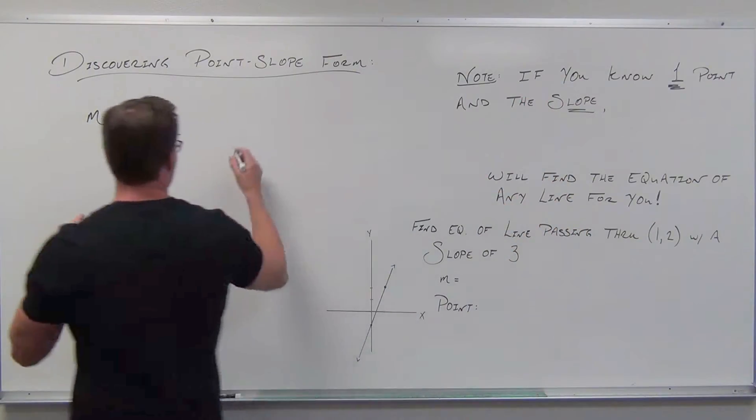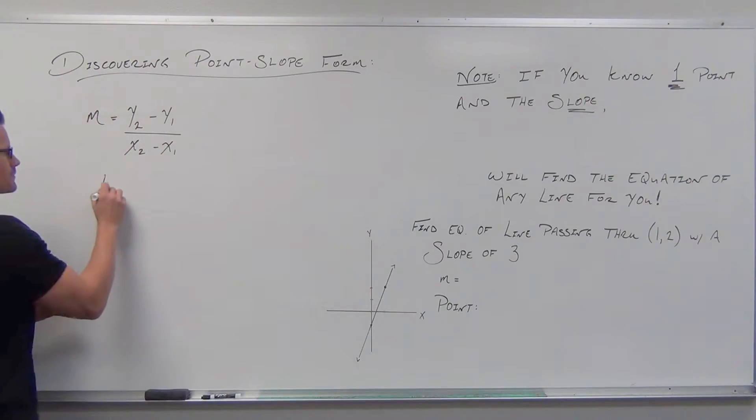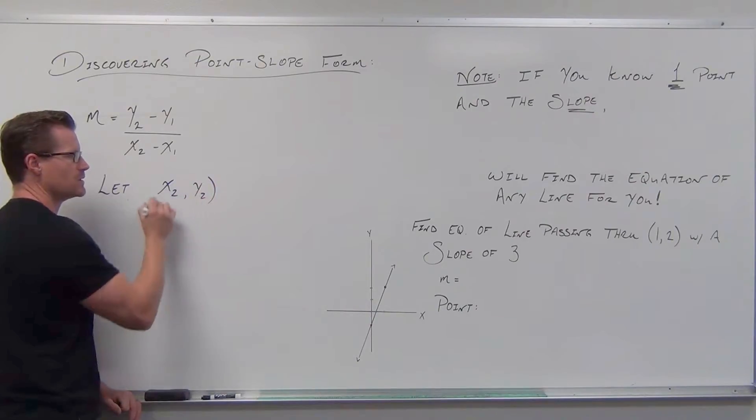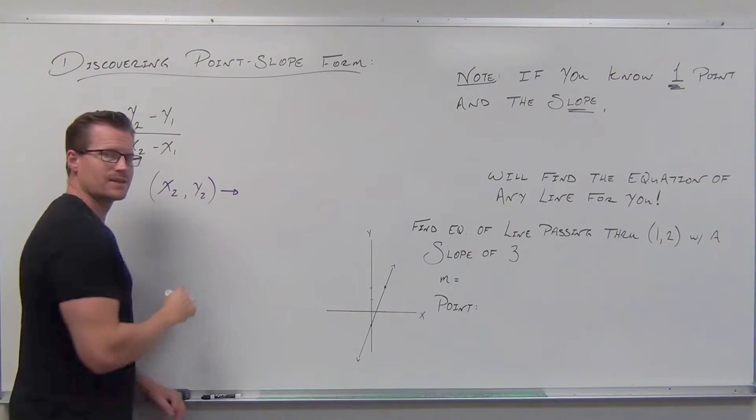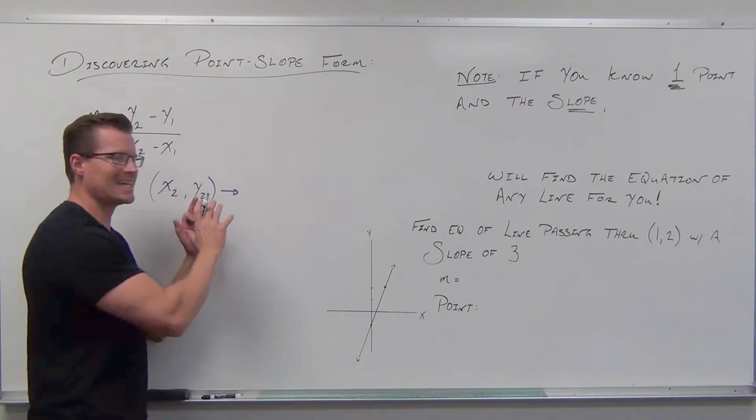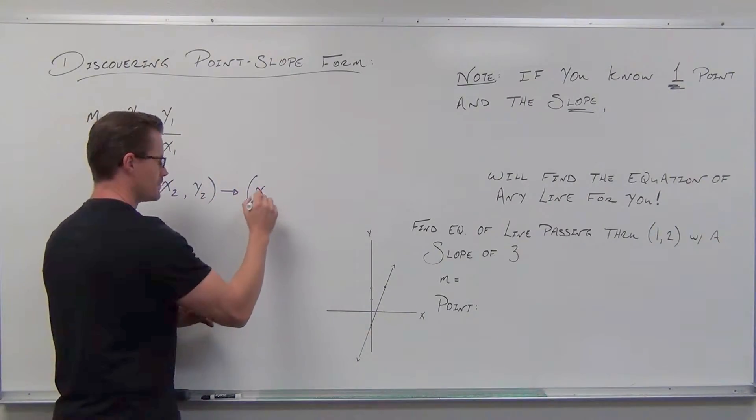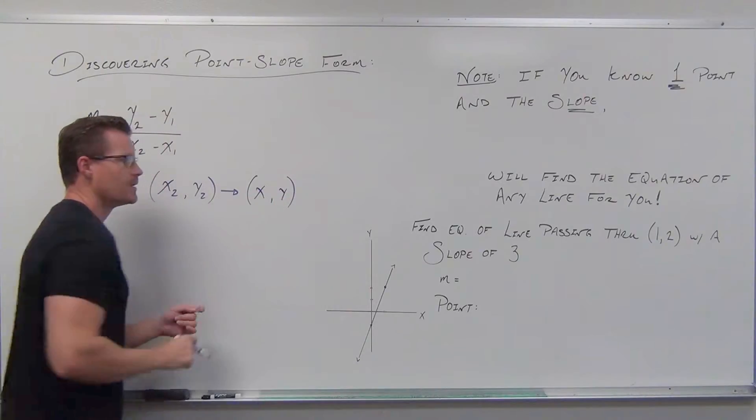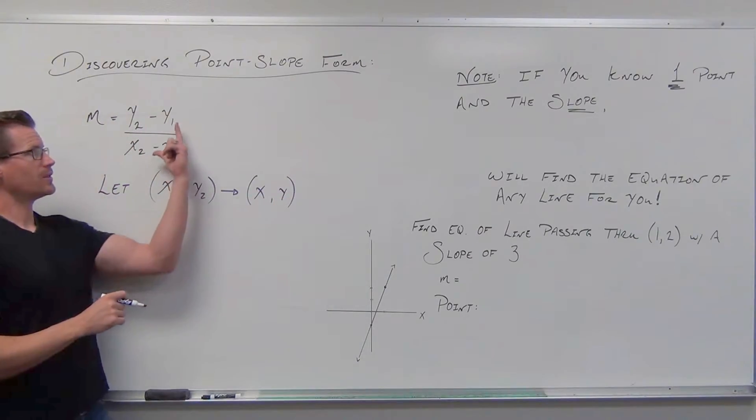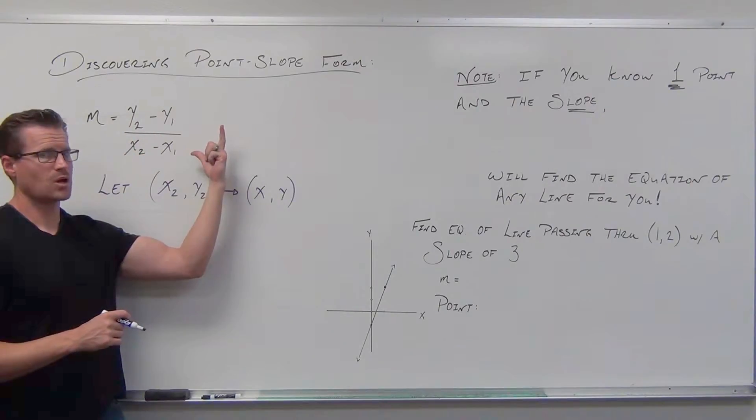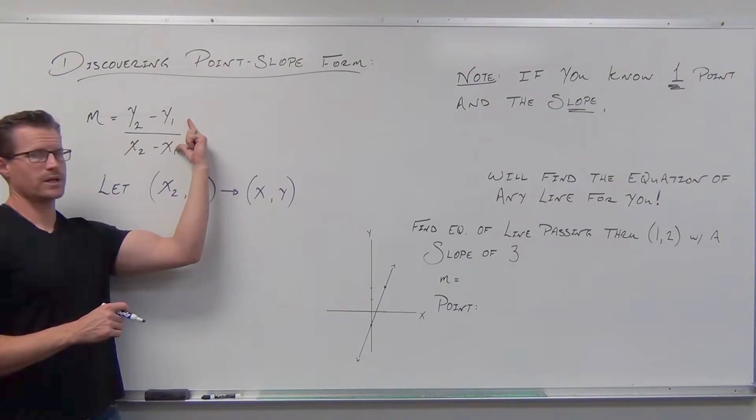Let our second fixed point, this x2, y2, let this become a variable point, just any other point on the line. The idea here is that the slope is created from knowing two points. Point slope says, what if you don't know that?